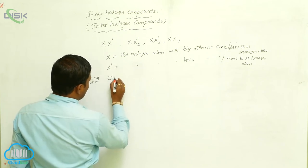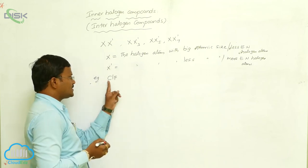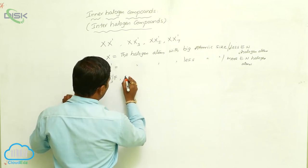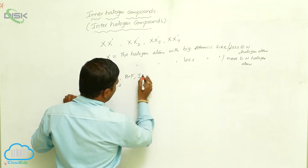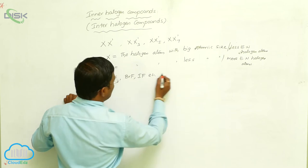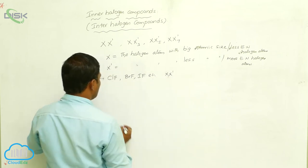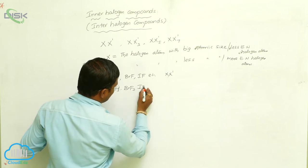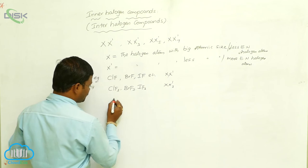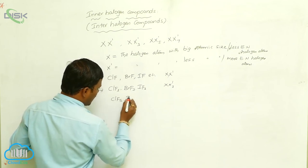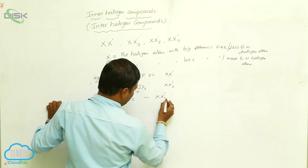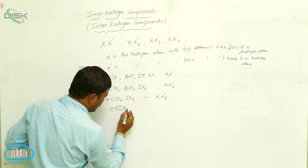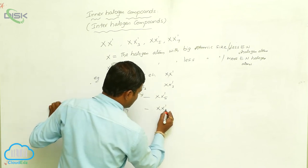For example, X may be chlorine and X' may be fluorine — chlorine is the less electronegative atom and fluorine is the more electronegative atom — and they produce ClF. Similarly, BrF and IF belong to the XX' category. CLF3, BrF3, and IF3 belong to the XX'3 category. ClF5 and IF5 belong to the XX'5 category. The only XX'7 Inter Halogen Compound is IF7.